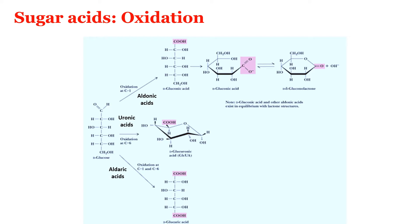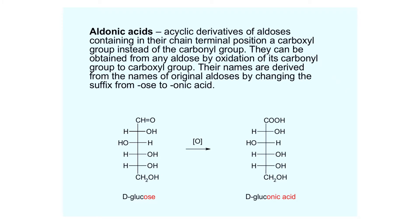In the case of glucose, when C1 is oxidized, we get gluconic acid. When C6 is oxidized, we get glucuronic acid. When both C1 and C6 are oxidized, we get glucaric acid. Glucaric acid is otherwise called saccharic acid. You can see how the first carbon is oxidized to yield gluconic acid — glucose is an aldose made up of six carbons. When the carbonyl carbon is oxidized, the CHO group is converted to a COOH group, giving gluconic acid. The suffix '-ose' is changed to '-onic acid'.